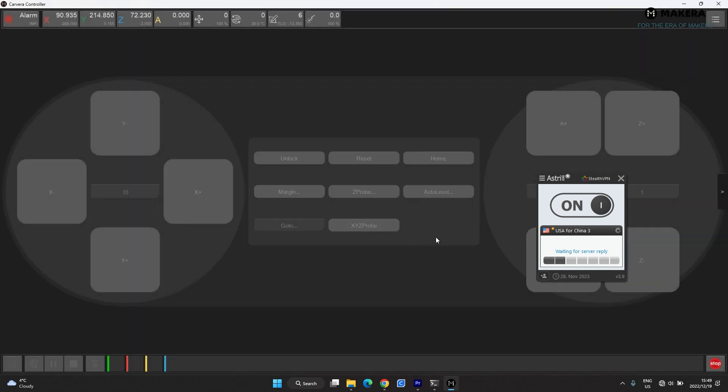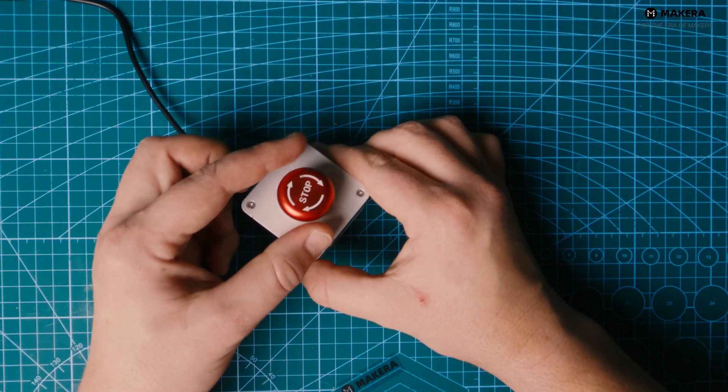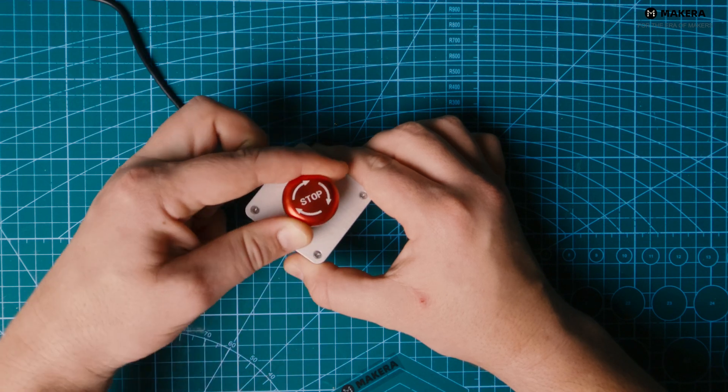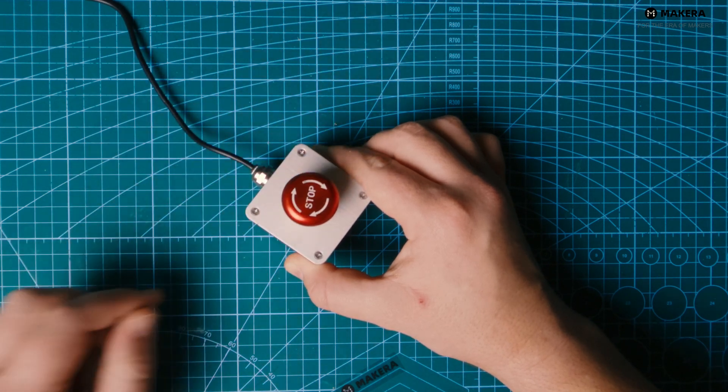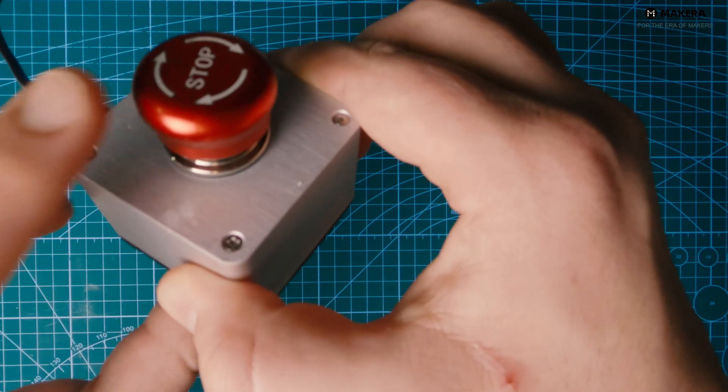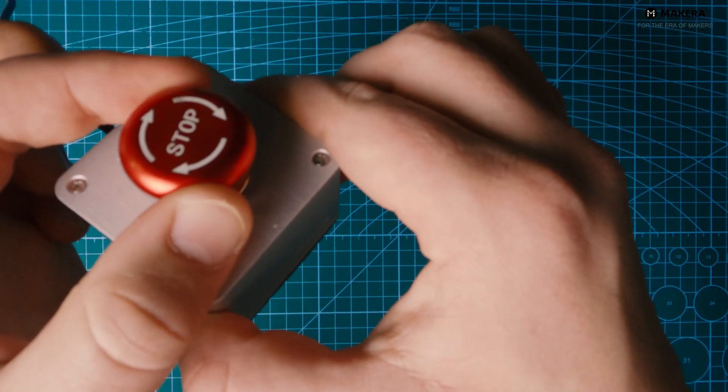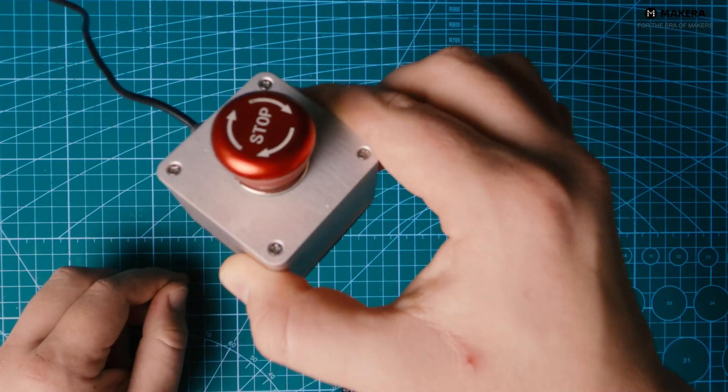This button has two states, engaged and neutral. When you've pushed the button it's engaged and will give you an alarm on your controller software. To unlock the machine again, you need to set the button back to neutral. You do this by just turning the knob.